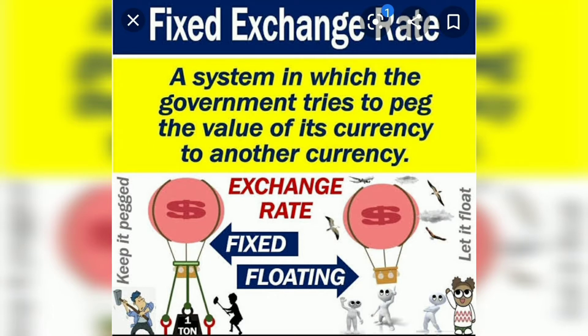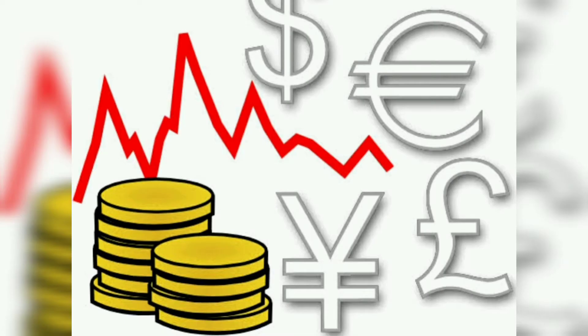How is stability achieved? To maintain the fixed rate, the government has to maintain large reserves of foreign currency to maintain the exchange rate at the fixed level.